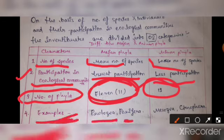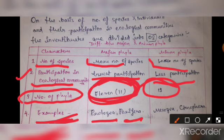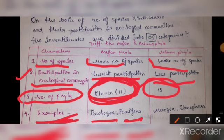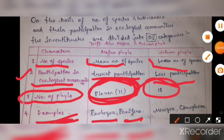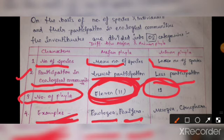Examples of major phyla include Protozoa, Porifera, Cnidaria, Coelenterata, and others — 11 phyla in total. Examples of minor phyla include Mesozoa, Ctenophora, and others. Your homework is to tell me in the comment section all the examples of major phyla and minor phyla. I hope this video is helpful for differentiating major phyla and minor phyla. Thank you so much for watching.